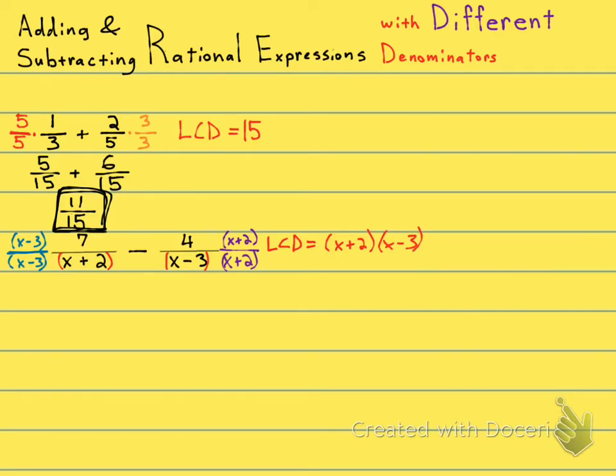So my new fraction on the left is going to be x minus 3 times 7, and I'm going to write it up like this, 7 times x minus 3, all over the common denominator of x minus 3, x plus 2. And now I'm going to subtract 4 times x plus 2 over x minus 3 times x plus 2.